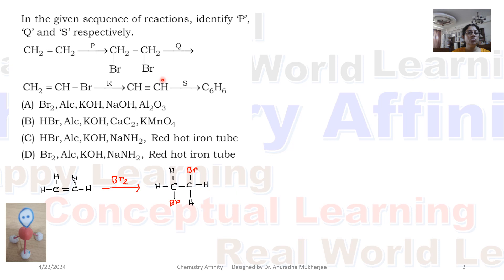Treated with reagent Q, we are getting CH2 double bond CHBr. R reagent giving you CH triple bond CH and when the reagent S is used we are getting C6H6 that means benzene.